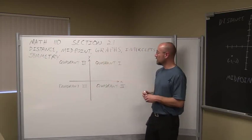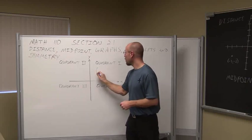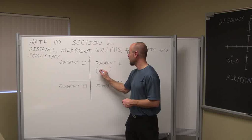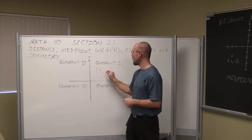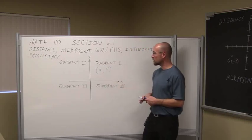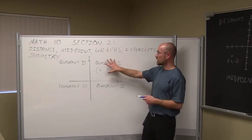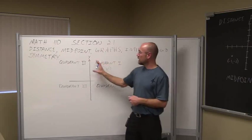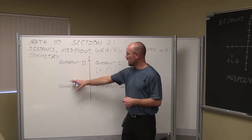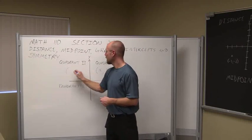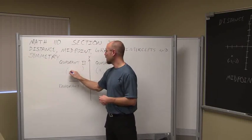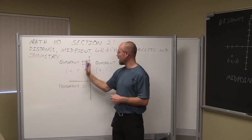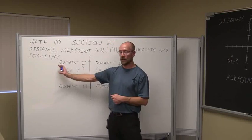In quadrant one, all the points we can graph have an x value and a y value where both are positive. That is the definition of quadrant one. In quadrant two, as we move counterclockwise, our x values are negative and our y values are positive. Anything to the left of the y-axis is a negative x value.